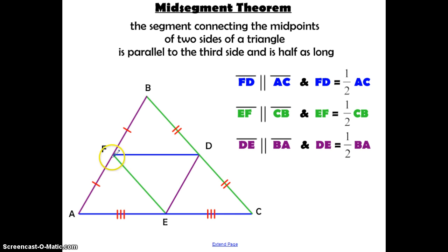The special property is that this segment is going to be parallel to and half as long as that third side. So FD is going to be parallel to AC and it's also going to be half the length of AC. This mid-segment, FE, is going to be parallel to BC and half the length of BC. This segment, DE, is going to be parallel to BA and going to be half the length of BA.